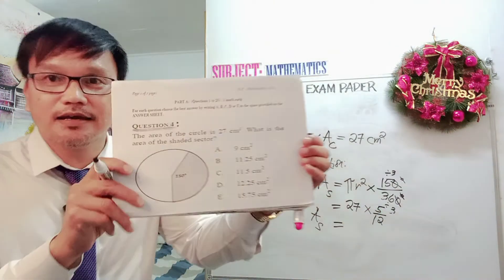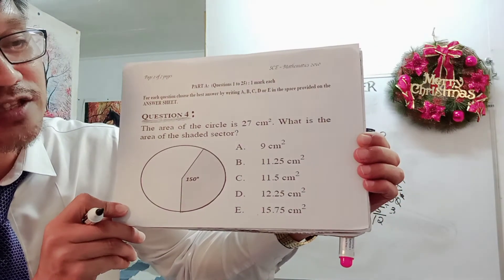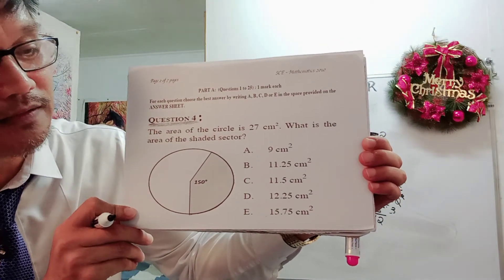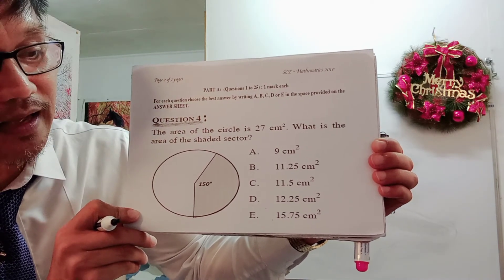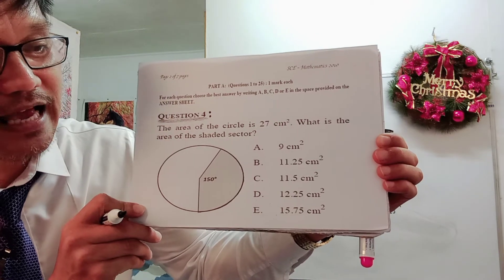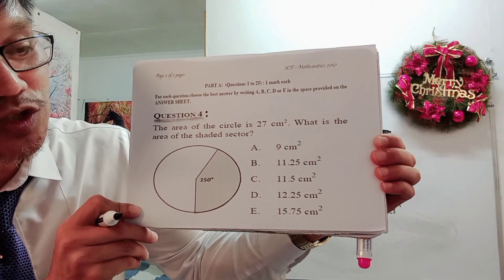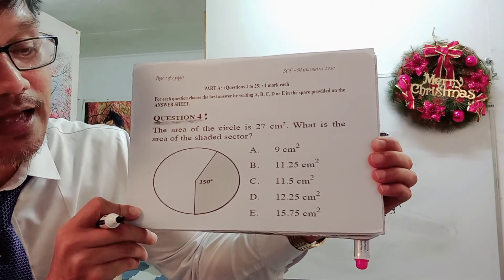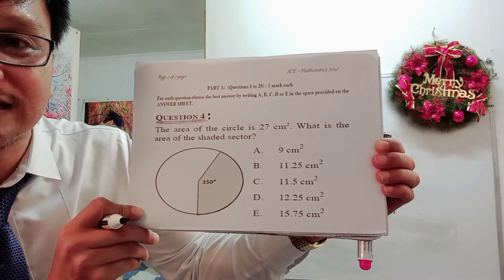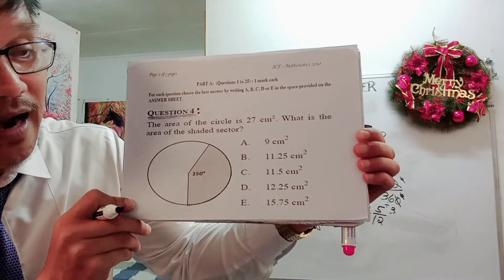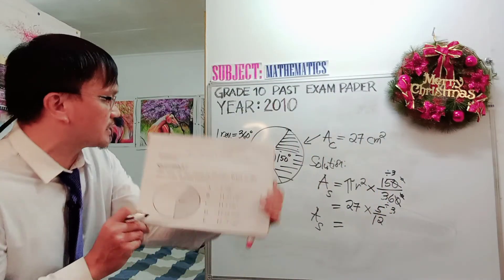Take note of the options here. Letter A is 9 square centimeter, letter B 11.25 square centimeter, letter C 11.5 square centimeter, letter D 12.25 square centimeter, and letter E 15.75 square centimeter. They're all, four of the options are in decimal. So let's work it out.